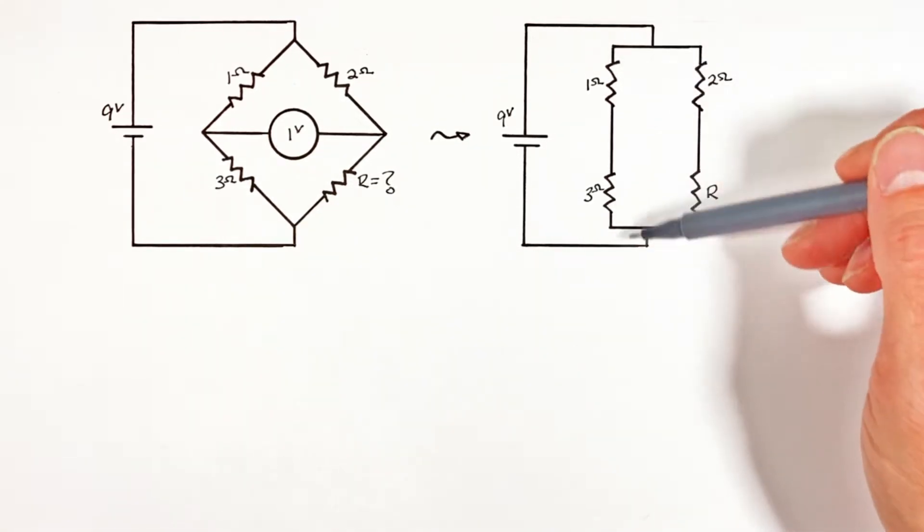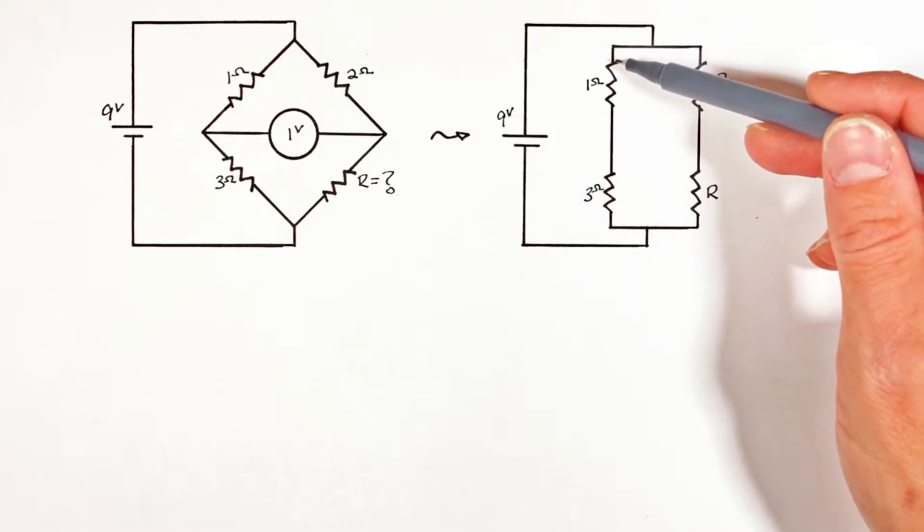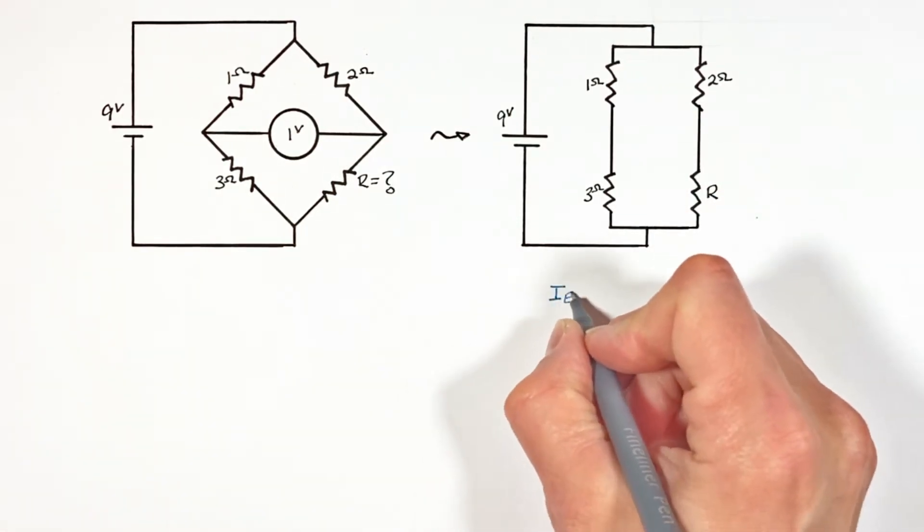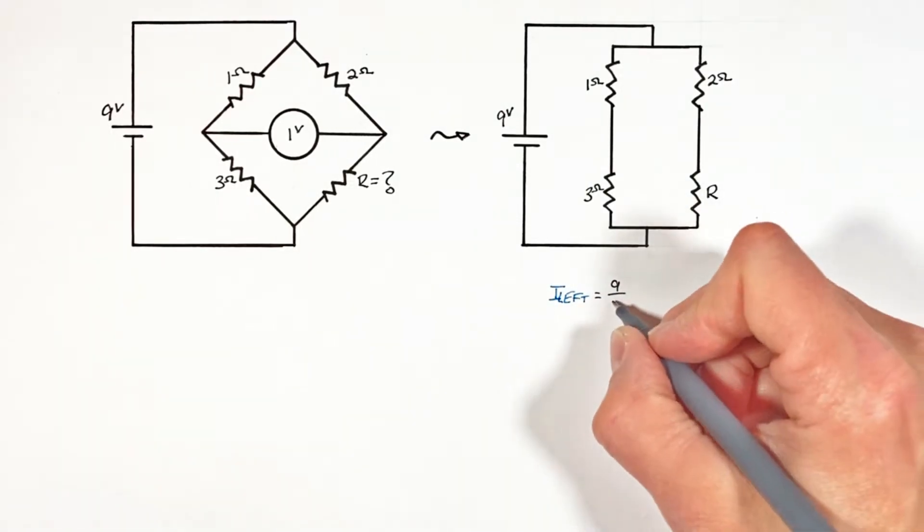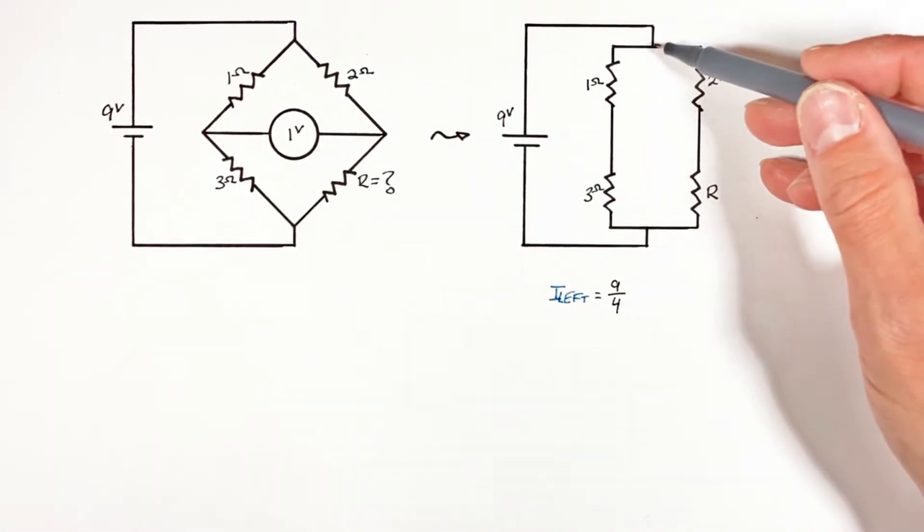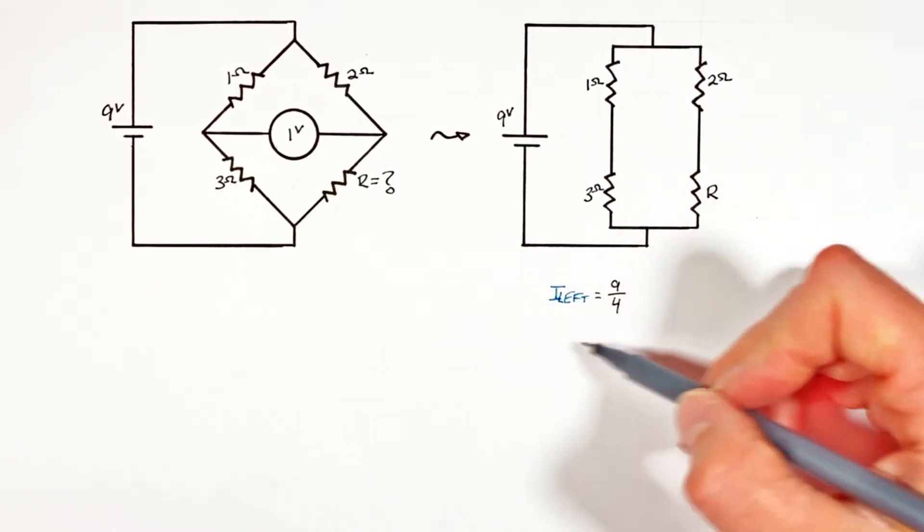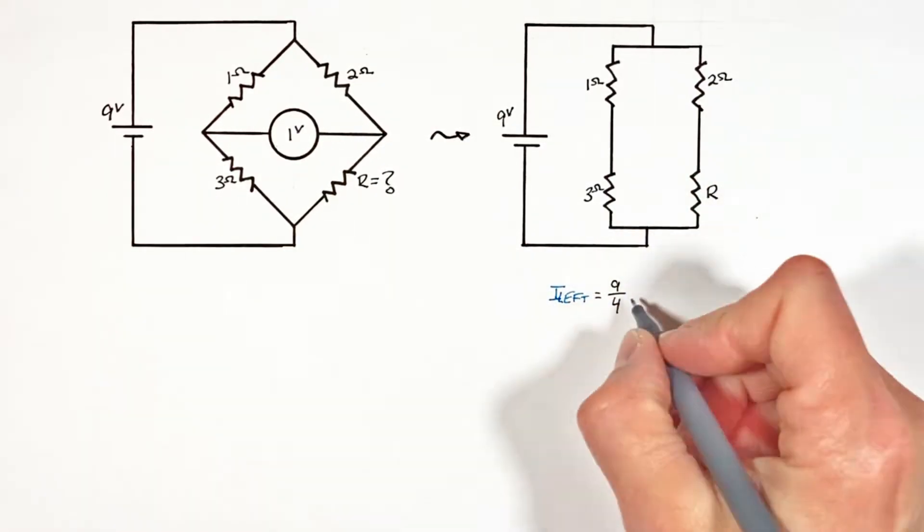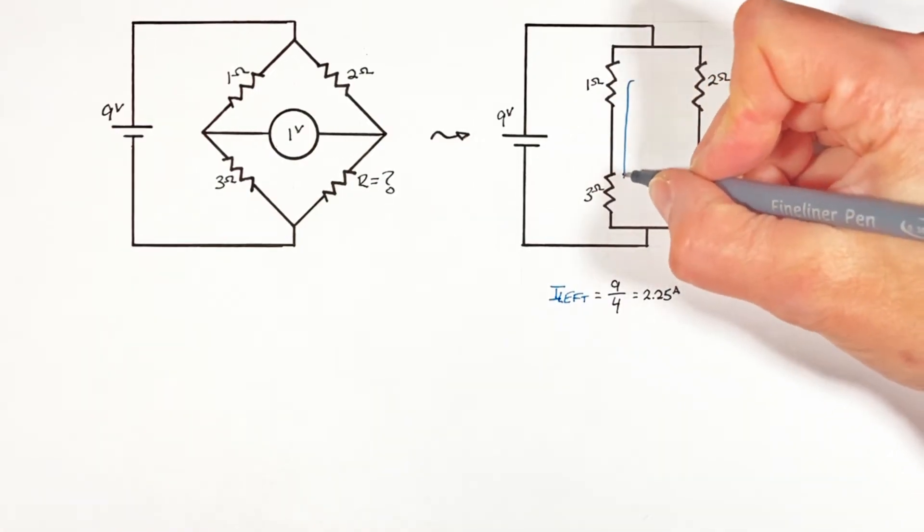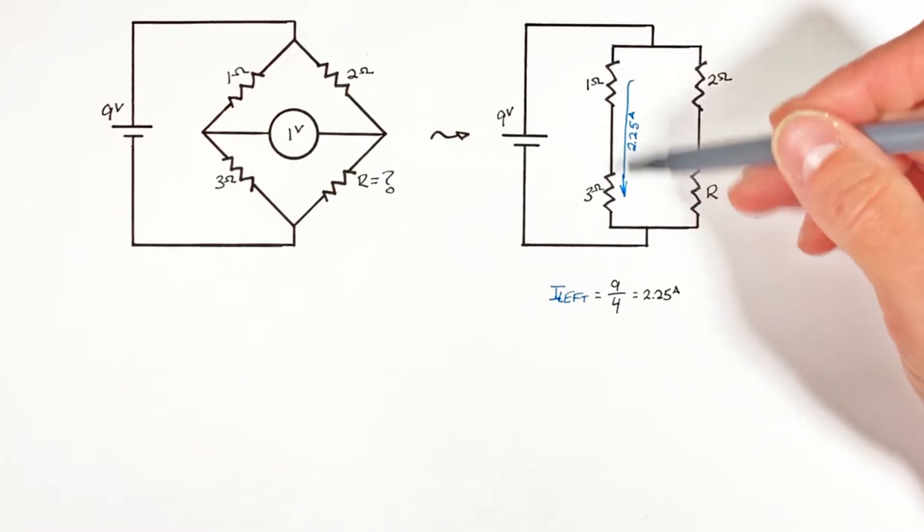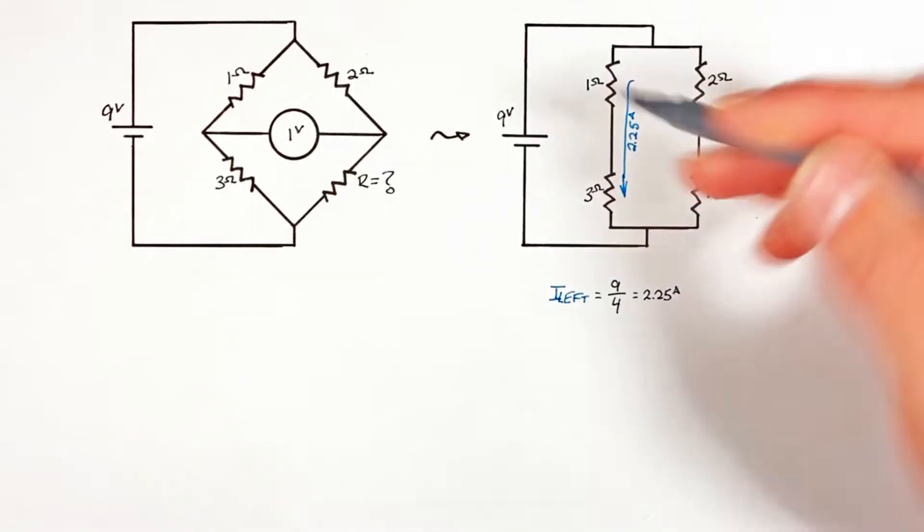See applying Ohm's law to the left side of this circuit we can solve for the current through the left side of the circuit. See there's nine volts across an equivalent resistance of four ohms. So solving for the current through the left side we find there's 2.25 amps flowing through each of these resistors on the left side of this bridge.